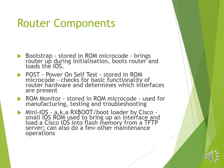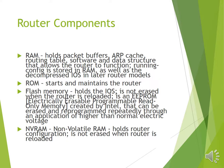TFTP means Trivial File Transfer Protocol. RAM — Random Access Memory — holds the packet buffer, ARP cache (Address Resolution Protocol), routing table, software, and data structures that allow the router to function. The running configuration can also be stored in RAM, as well as the decompressed iOS for the router model.